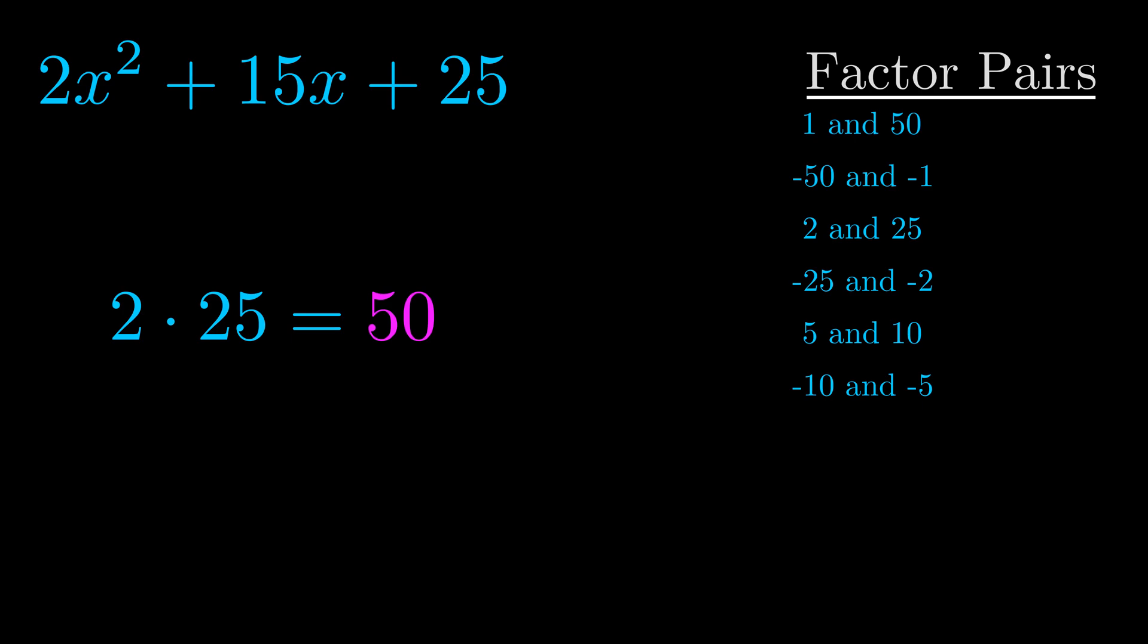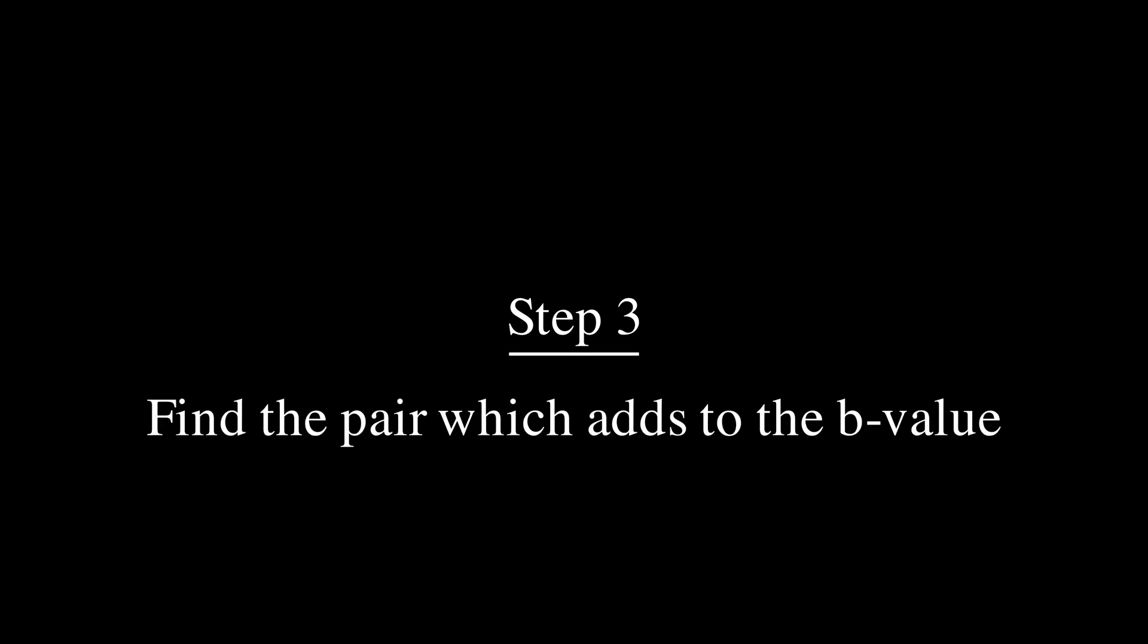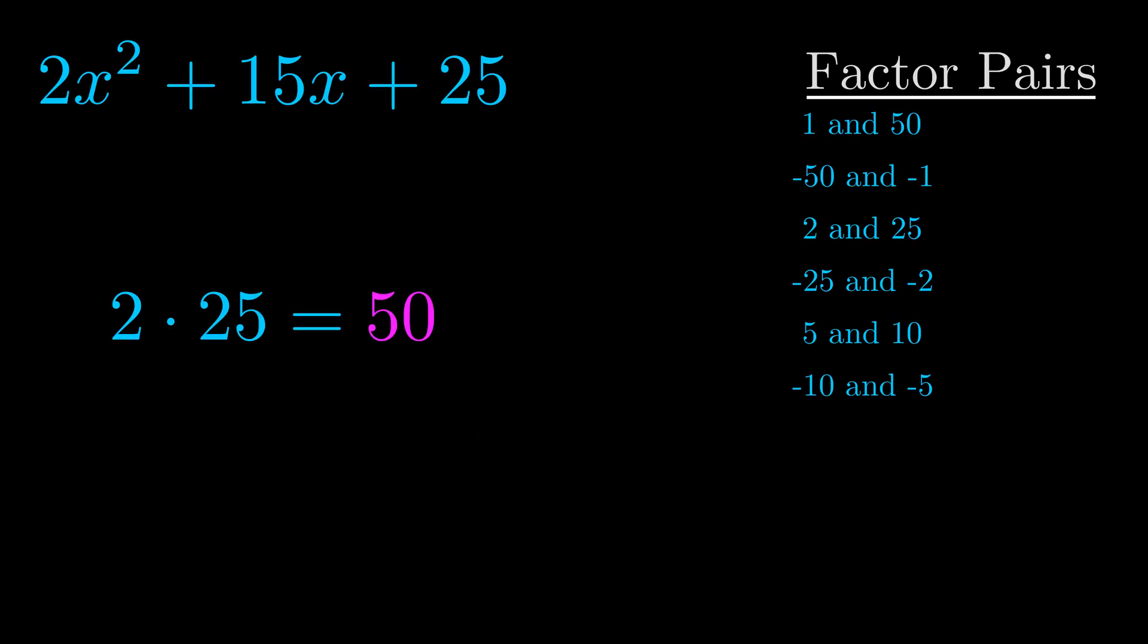Now once you have these factor pairs, the goal is to find which of these pairs adds to the b value. The b value is the coefficient on the x term. That's the middle term, the one that we haven't done anything with yet. And really this is the only factor pair that we need.